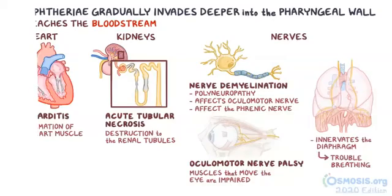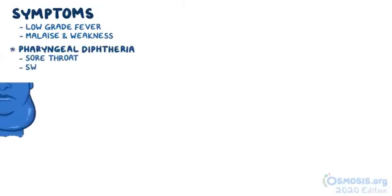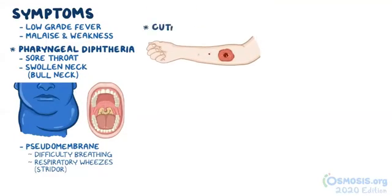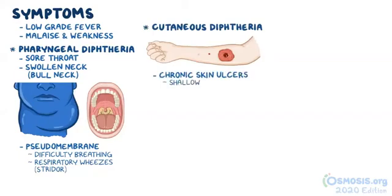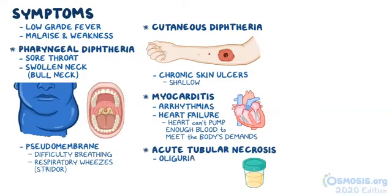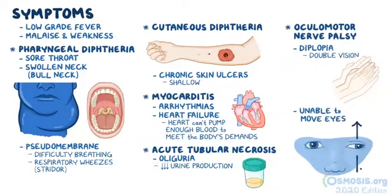Regardless of the affected system, people with diphtheria infection present with symptoms of low-grade fever, general malaise, and weakness. In pharyngeal diphtheria, people present with sore throat, a swollen neck commonly called bull neck, and pharyngeal pseudomembrane formation that can cause difficulty breathing with respiratory wheezes or stridor. In cutaneous diphtheria, there are typically chronic shallow skin ulcers. With myocarditis, there might be arrhythmias or heart failure. With acute tubular necrosis, there might be oliguria, which is decreased urine production. With oculomotor palsy, there might be diplopia, or the person might not be able to move their eyes up, down, or to the side.